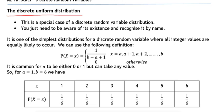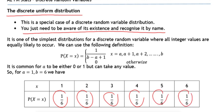This you just need to be aware of its existence and recognize it by name. What characterizes the discrete uniform distribution is that every probability is the same. So we have a uniform probability throughout the distribution.